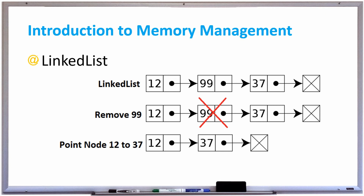We'll talk more about linked lists in a different video, but imagine if we needed to remove 99. Rather than having to shift all the elements over, all we have to do is take the arrow — the link that's pointing from 12 to 99 — and repoint it to 37 instead, and you're done. It didn't have a giant performance problem; it happened a lot quicker, and that is a great way to manage memory in your program.